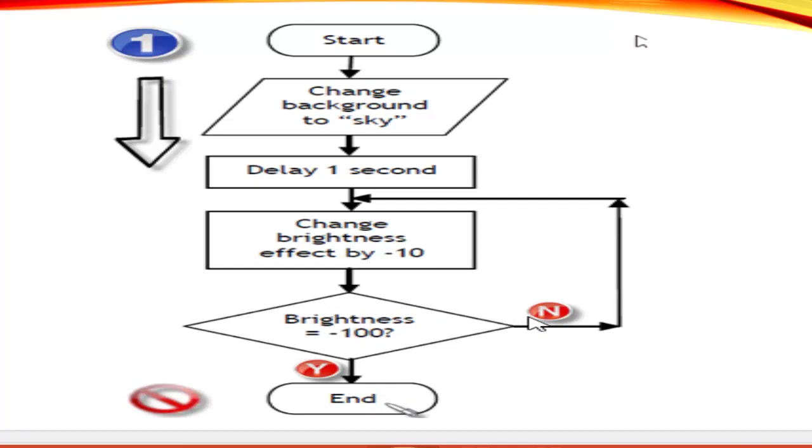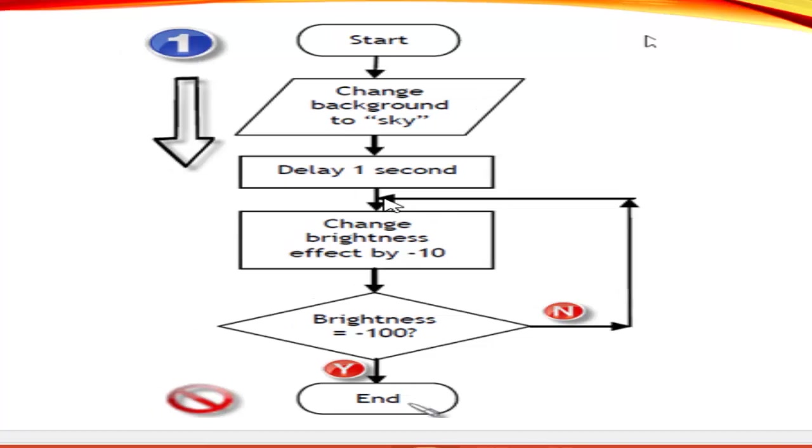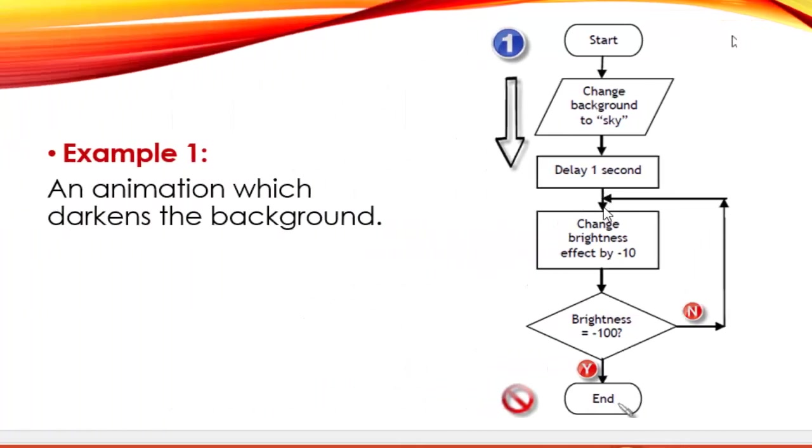And every arrow will bring us to a new action or a decision. And N stands for No. Y stands for Yes. So a question like this, is the brightness equals to negative 100? If it is Yes, then the animation ends. If it is No, then it will loop up to the right and to the next arrow that joins back to the arrow that goes to change brightness effect by negative 10.